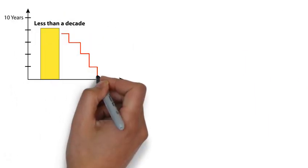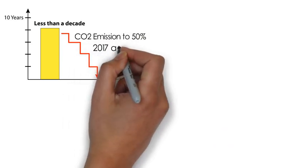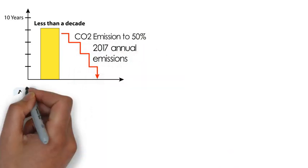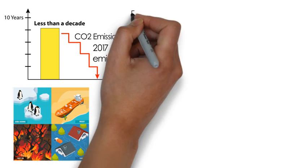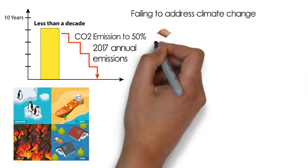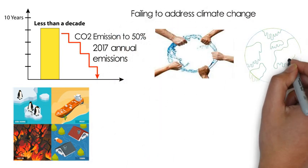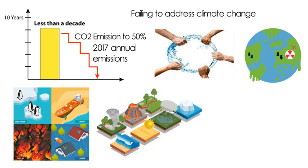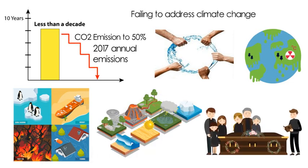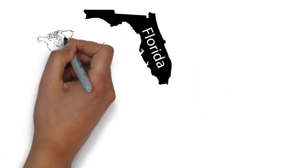We have less than a decade to reduce carbon emissions to 50% of our 2017 annual emissions and avoid the worst effects of global warming. Failing to address climate change will result in water wars, ever-accelerating environmental impacts, natural disasters, and untold millions of deaths. Florida and many other parts of the world will slip under the rising seas.